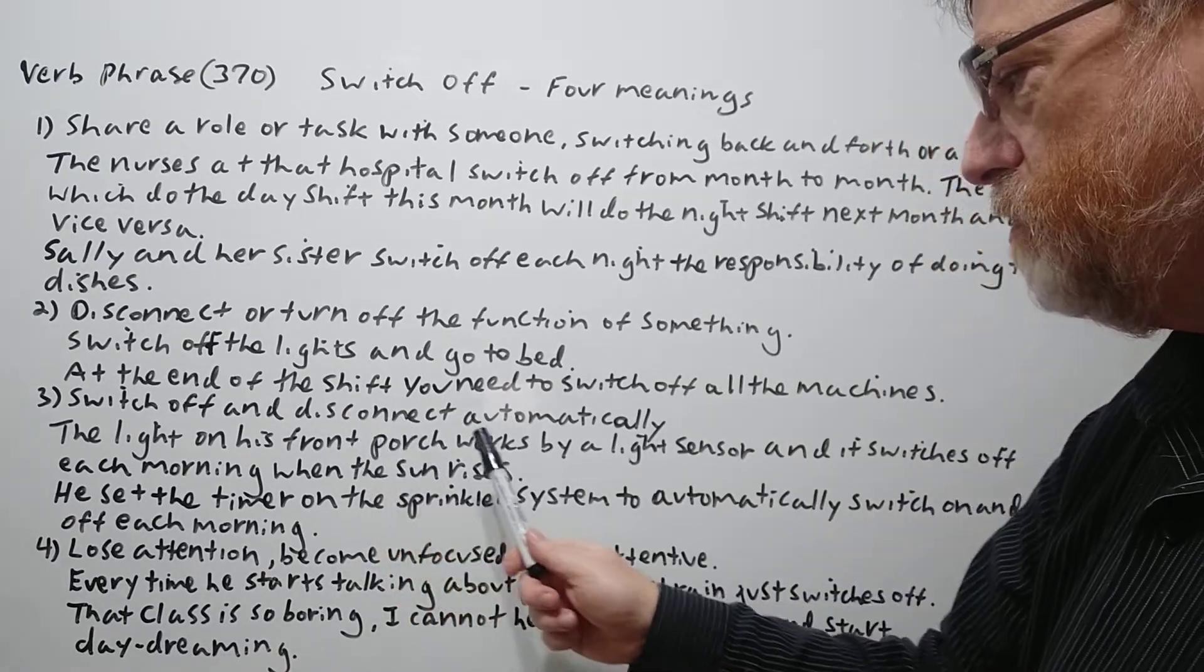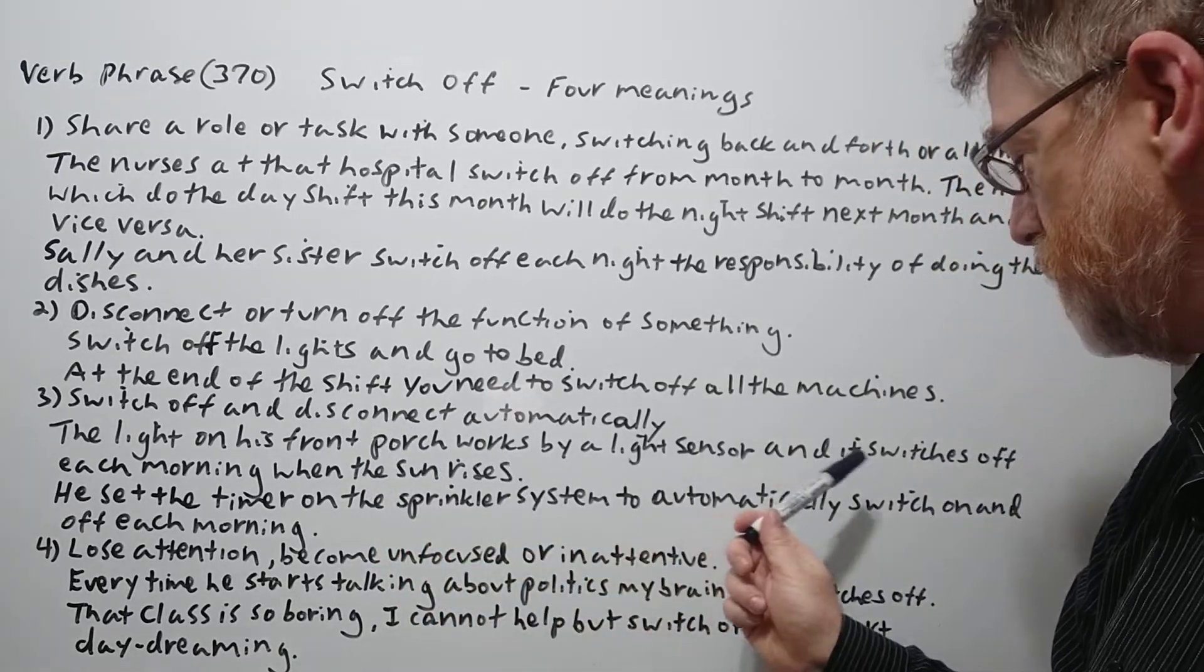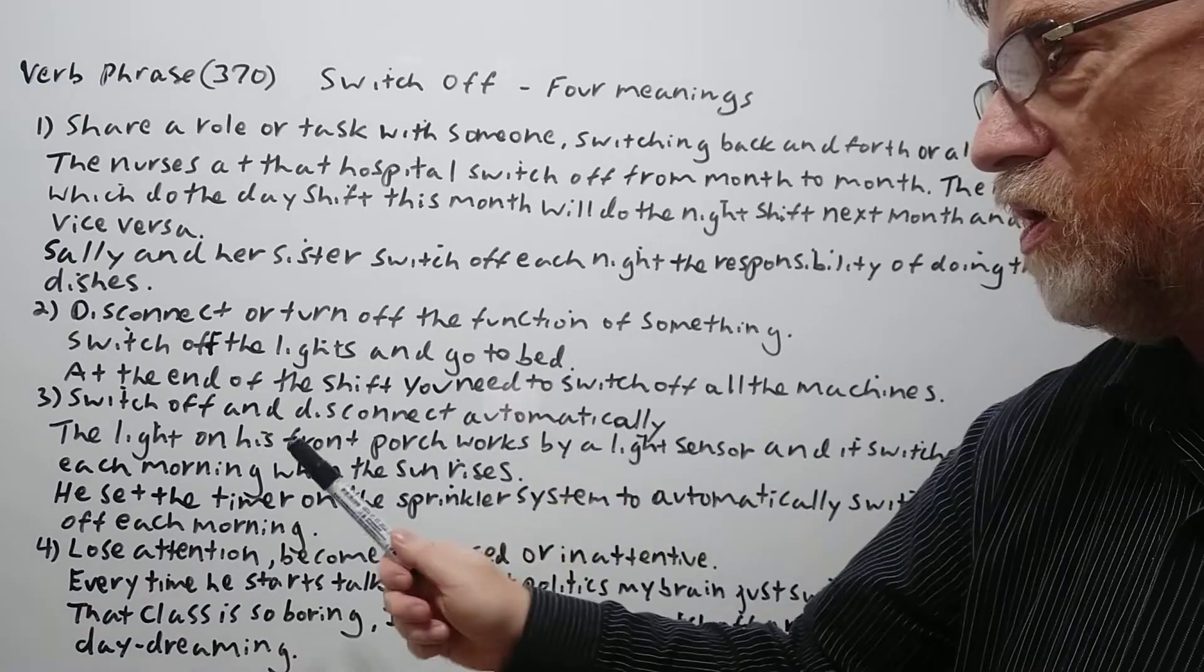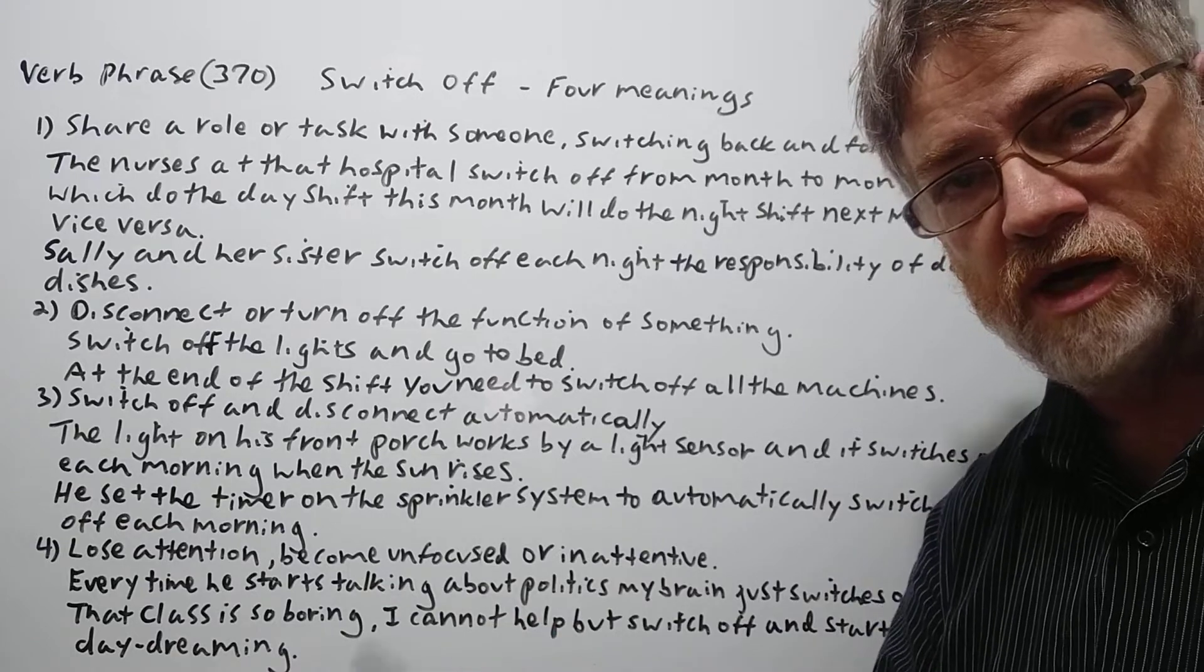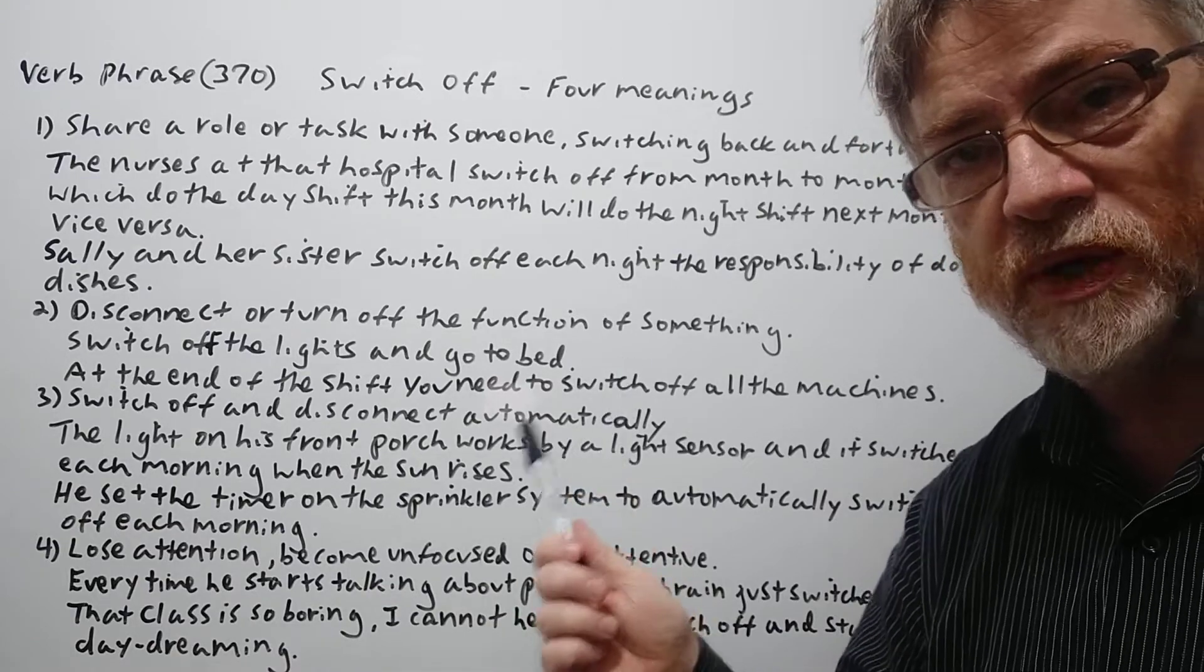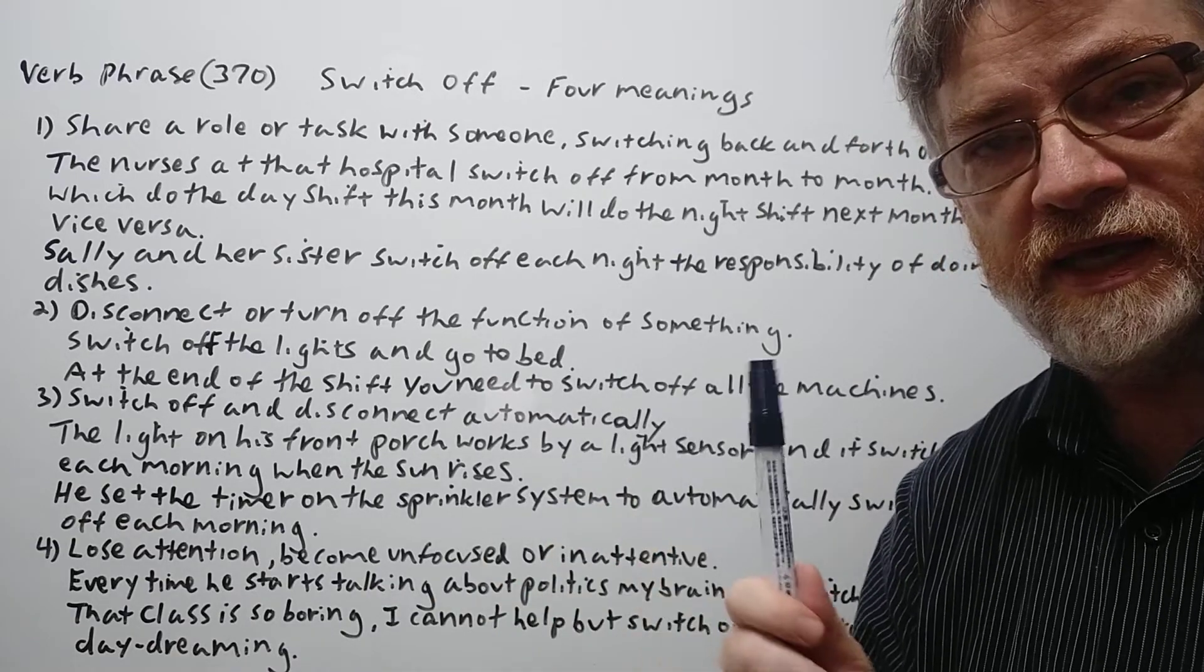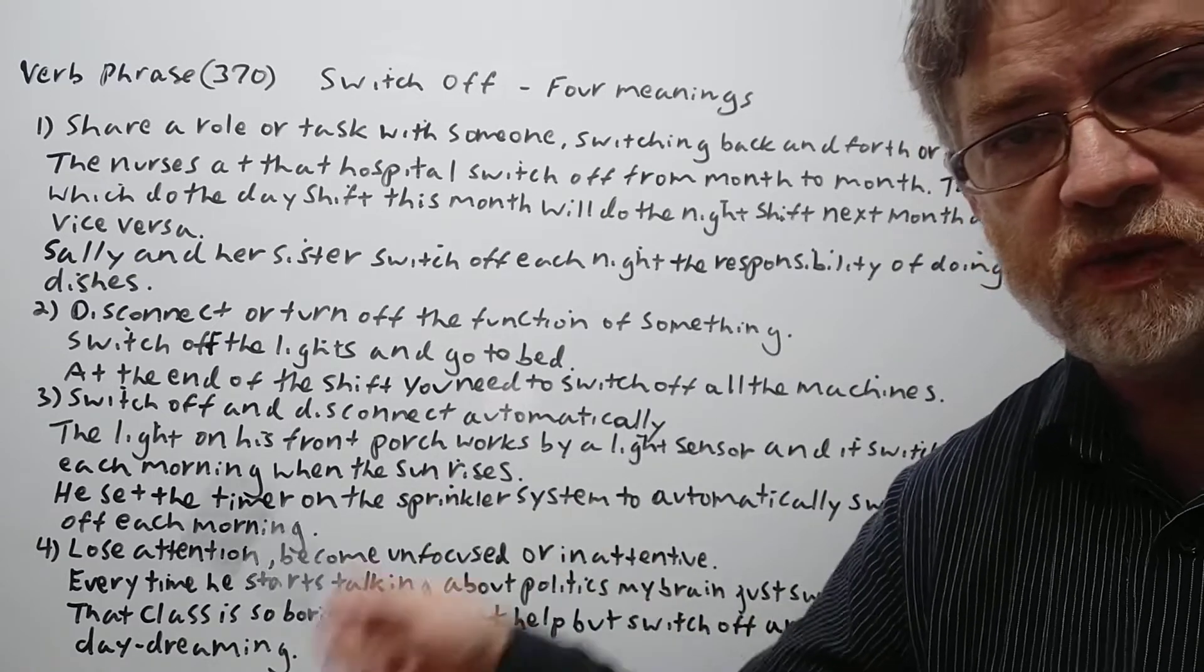The light on his front porch works by a light sensor, and it switches off each morning when the sun rises. So a person isn't turning it on and off. The system is doing it by itself. So the sensor or whatever switches it off.